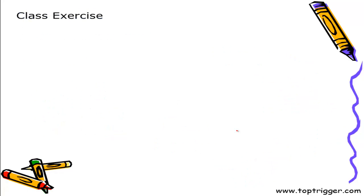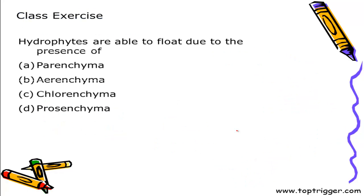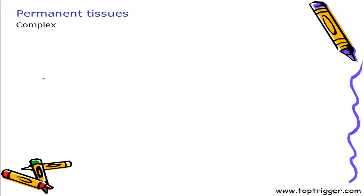Let's look at this question: hydrophytes are able to float due to the presence of — as we have just discussed — aerenchyma. Because aerenchyma has air cavities, it helps hydrophytes by providing buoyancy.